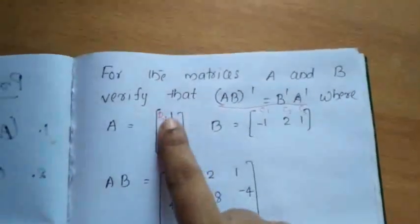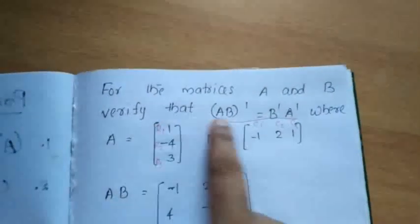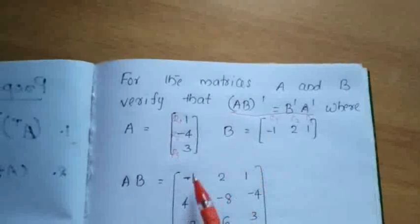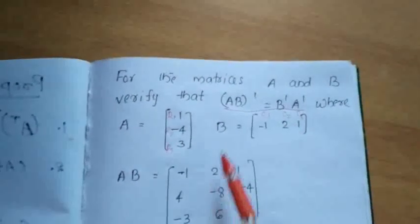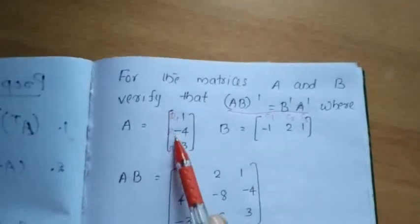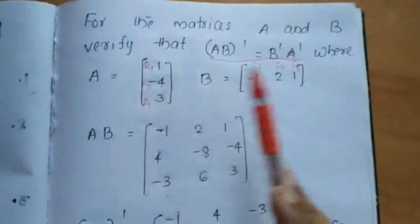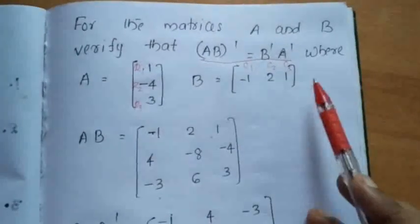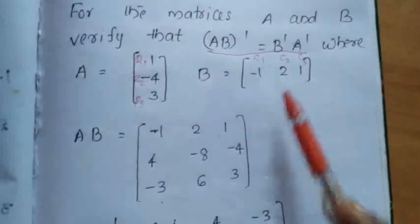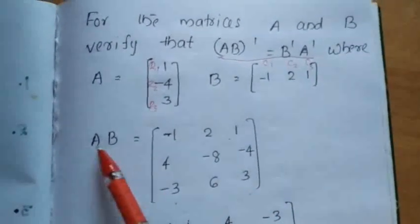Now computing AB: first row into first column — 1 into -1 is -1. First row into second column — 1 into 2 is 2. First row into third column — 1 into 1 is 1. Second row: -4 into -1 is 4; -4 into 2 is -8; -4 into 1 is -4. Third row: 3 into -1 is -3; 3 into 2 is 6; 3 into 1 is 3. So now we have got AB.